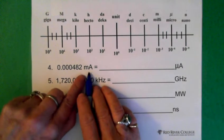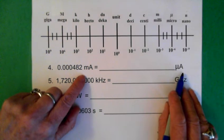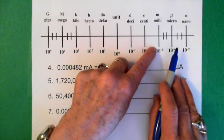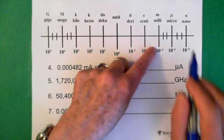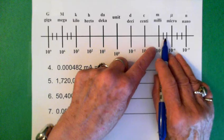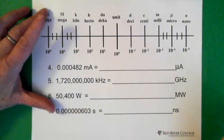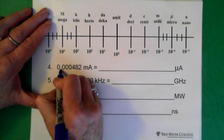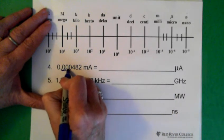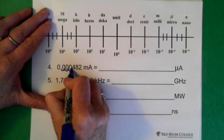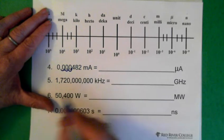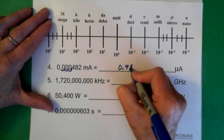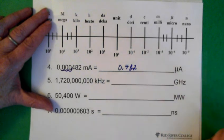Now we're at milliamps and we want to go to microamps. Milli is here, we want to go to micro — moving the decimal one, two, three places to the right. We end up with 0.482 microamps.